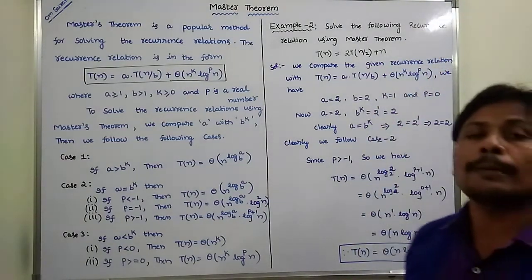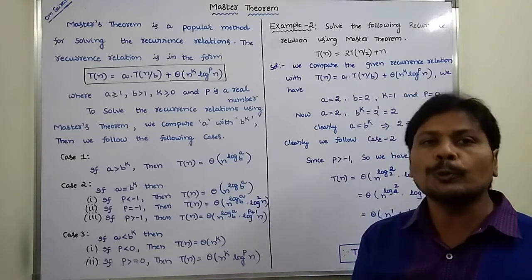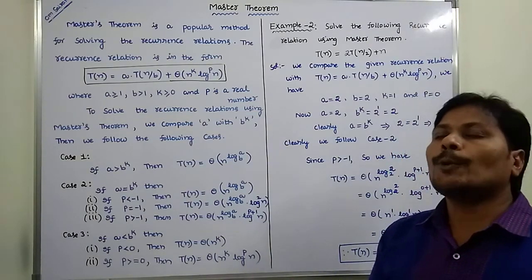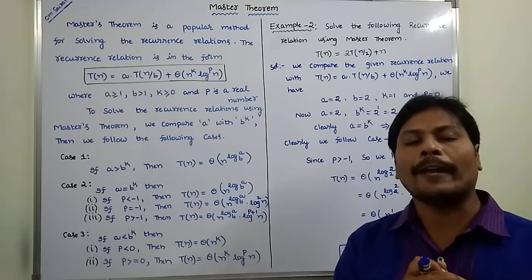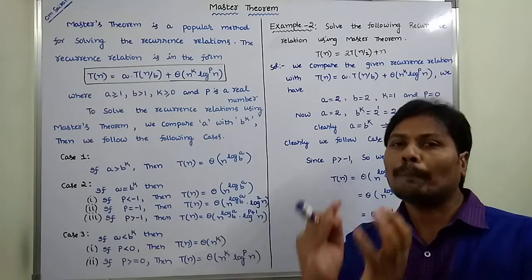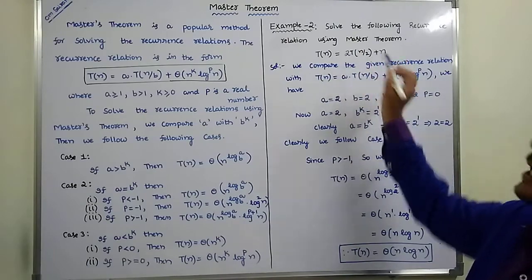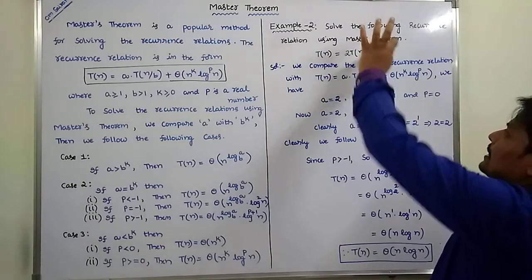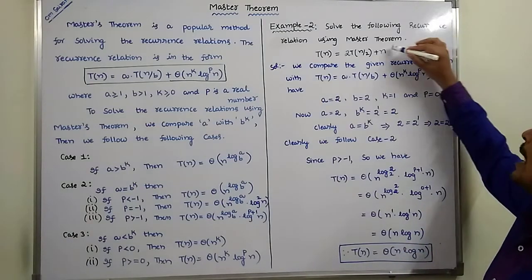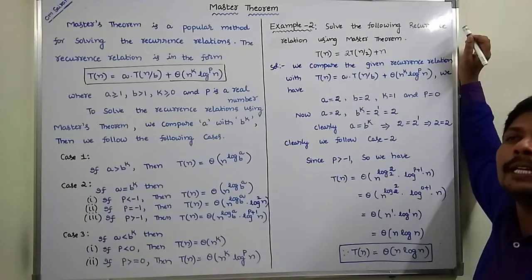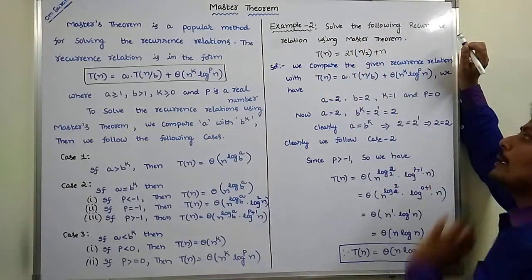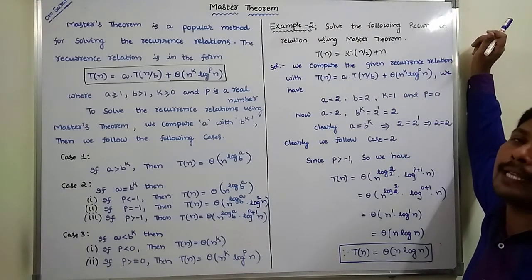Here, n time is used for partitioning the given list into two parts — the first part is n/2 and the second part is n/2. The time taken for the first half is T(n/2) and the time taken for the second half is T(n/2). So T(n/2) + T(n/2) gives us 2T(n/2) + n, where n is used for dividing the list into two parts, and 2T(n/2) represents the time taken for sorting each sublist. This is the merge sort recurrence relation.